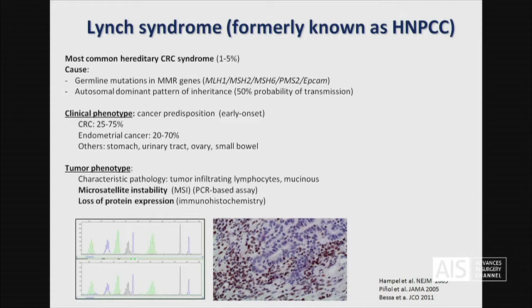Lynch syndrome is the most common hereditary colorectal cancer syndrome. Up to 5% of tumors are responsible for this syndrome, and the cause is a germline mutation in mismatch repair genes. It follows an autosomal dominant pattern, and the clinical phenotype is essentially cancer predisposition. In families with Lynch syndrome, there is a lifetime risk of colon cancer of 75%, almost 70% for endometrial cancer, and less frequently other tumor types.